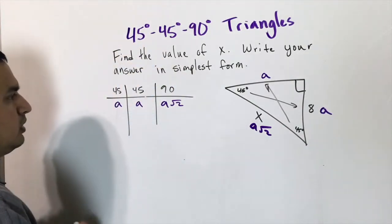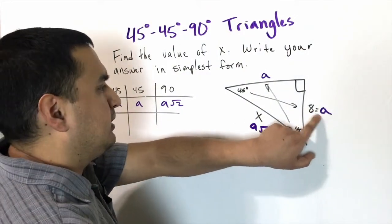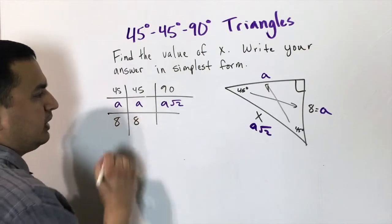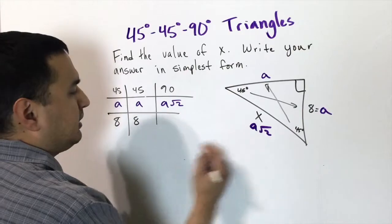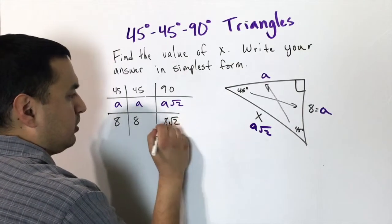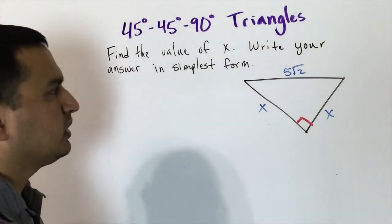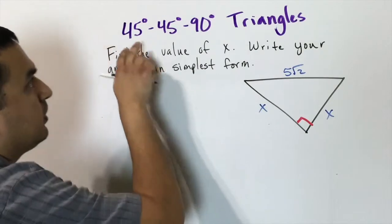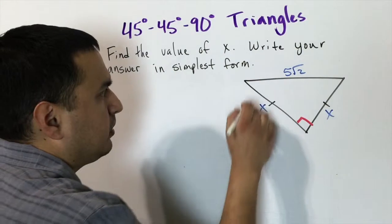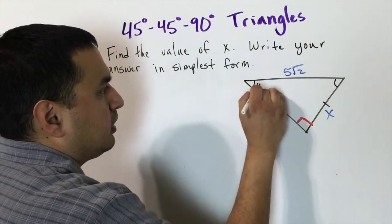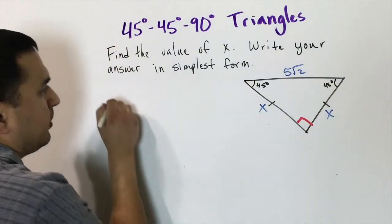According to the picture, since 'a' equals eight, these two legs are both eight. All we have to do for the hypotenuse is substitute eight in place of 'a', so the answer is 8√2. Here's another version with the same 45-45-90. I know it's 45-45-90 because these two sides are both labeled x, meaning the sides are congruent, so both angles have to be 45°.